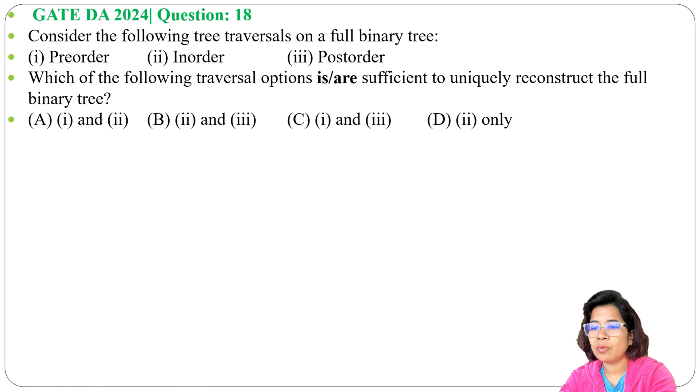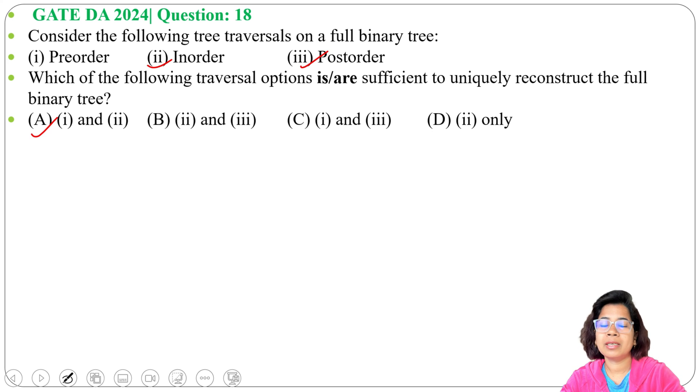So option A: 1 and 2, pre-order and in-order—yes. Option B: 2 and 3, in-order and post-order—yes. If we have in-order and post-order, we can construct the unique binary tree.